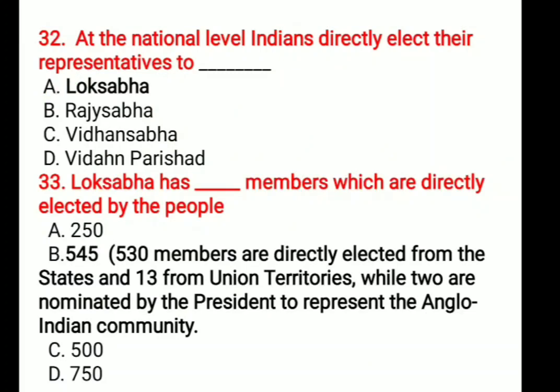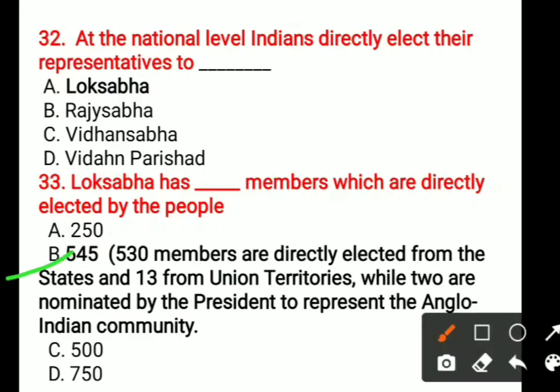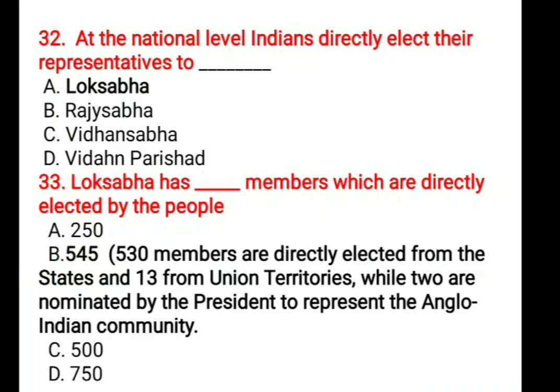Question number 33: Lok Sabha has blank members which are directly elected by the people. Options are: A. 250, B. 545, C. 500, D. 750. The correct answer is 545. In that 545 is the total membership, but directly elected by the people from states it is 530 members, 13 from union territories, while 2 are nominated by the president representing the Anglo-Indian community.